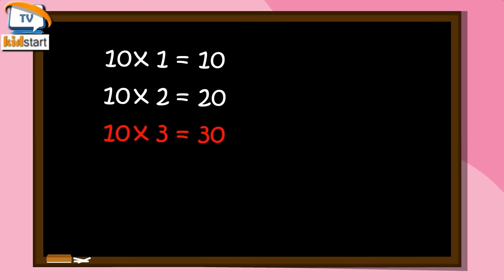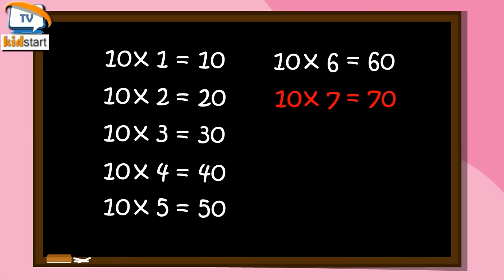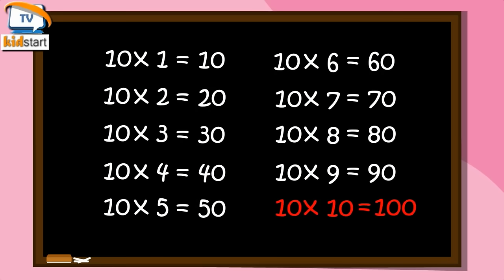Ten fours are forty. Ten fives are fifty. Ten sixes are sixty. Ten sevens are seventy. Ten eights are eighty. Ten nines are ninety. Ten tens are one hundred.